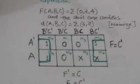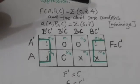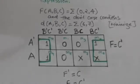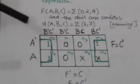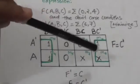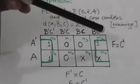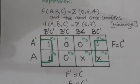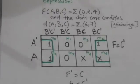First of all, we will mark those squares whose minterms are included in this function — that is m0, m2, and m4 — by 1. So the squares representing minterms m0, m2, and m4 are marked by 1. Don't care conditions, that is minterms m6 and m7, are marked by cross or x. The minterms which are neither marked by 1 nor marked by x are marked by 0.